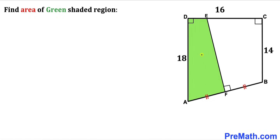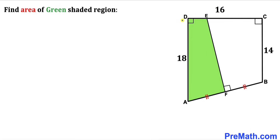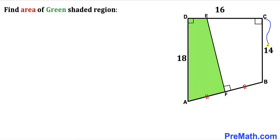Welcome to pre-math. In this video we have a green shaded quadrilateral DEFA fully inscribed in a trapezoid ABCD, such that side length CD is 16 units, side length AD is 18, and side length BC is 14.